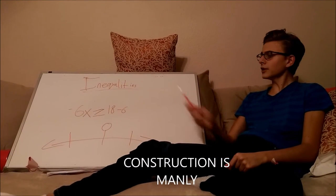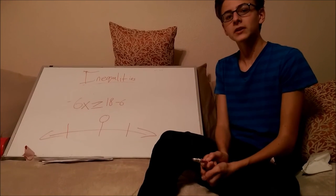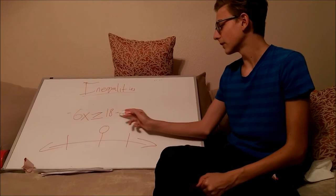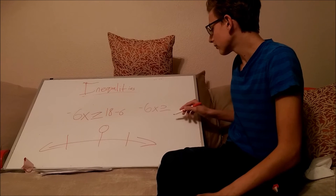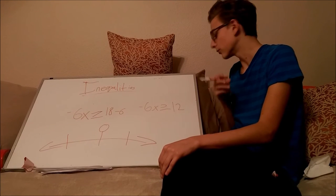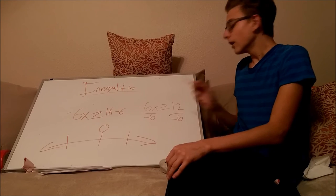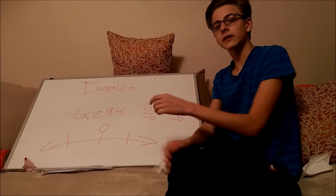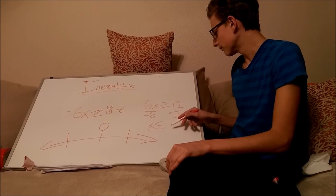Now we're going to be learning about inequalities and how to put them on a number line. Solving the inequality is very similar to solving a normal equation. We have to get rid of the 6, so we subtract 6 from 18 to get negative 6x is greater than or equal to 12. Then we divide both sides by negative 6. The key thing with inequalities is that because you are dividing by a negative, you have to flip the sign. So now it would be x is less than or equal to negative 2.